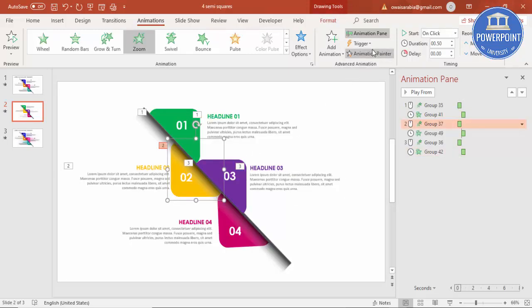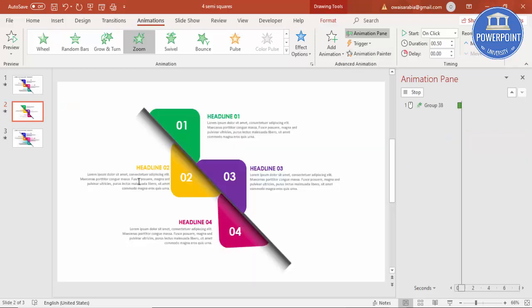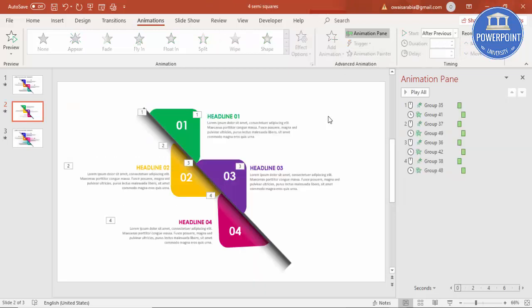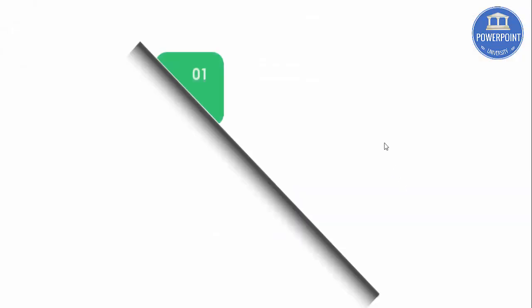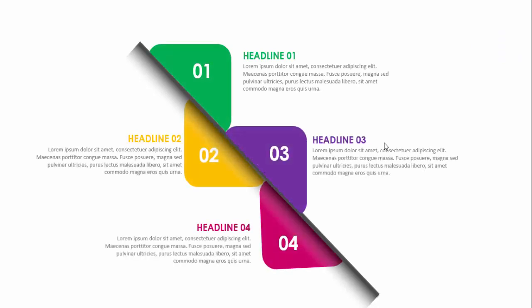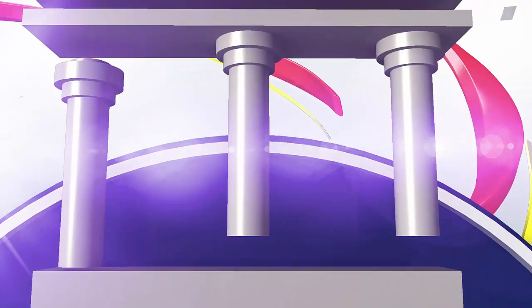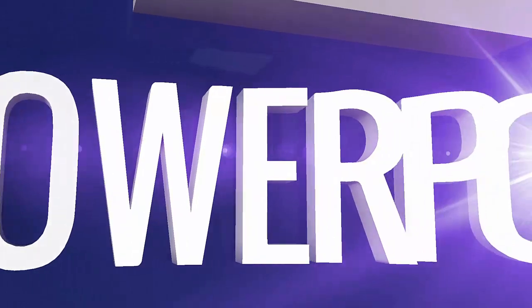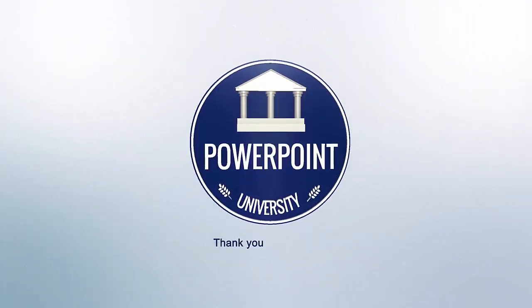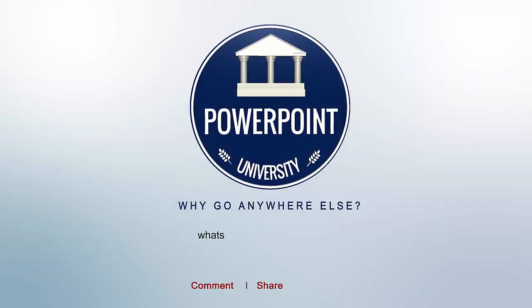Select the second animation and apply it to step four, and do the same with the text. Let's see how it looks in slideshow mode — when I click it shows the first, then second, third, and fourth. That's it from me friends, thank you for watching my YouTube channel. Don't forget to subscribe to PowerPoint University — see you soon with more interesting stuff, goodbye!